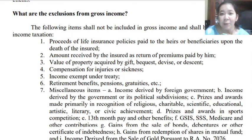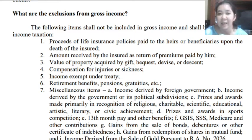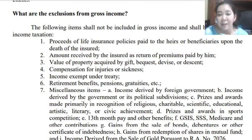An example of income that is exempted is proceeds of life insurance policies paid to the heirs or beneficiaries upon the death of the insured. If there is an insurance that is paid to the beneficiaries, these are exempted from tax. Second is the amount received by the insured as return of premiums — this is the payment of the owner of the insurance policy returned to him.